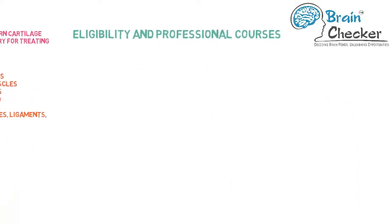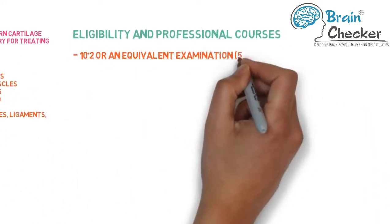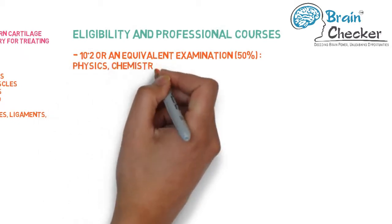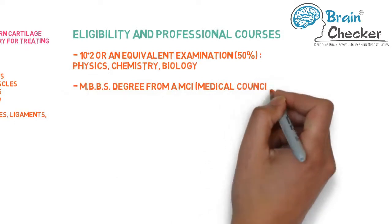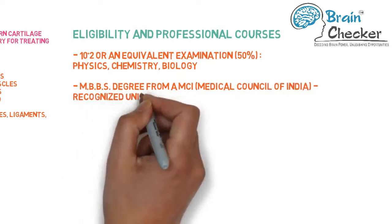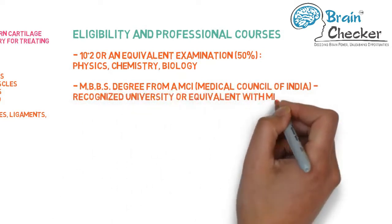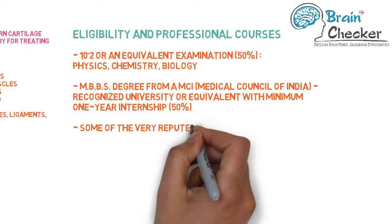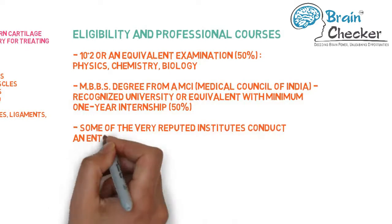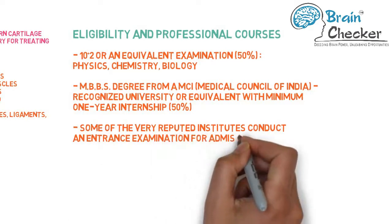Candidates who wish to do MS should have cleared 10 plus 2 or equivalent examination with a minimum of 50 percent marks in physics, chemistry, and biology. They need an MBBS degree from an MCI (Medical Council of India) recognized university or equivalent with minimum one-year internship completed with a minimum aggregate score of 50 percent.